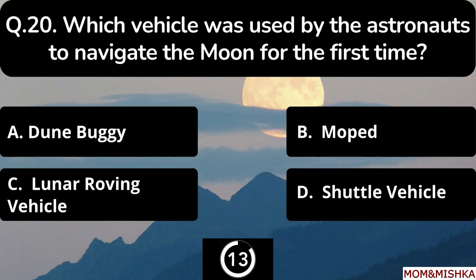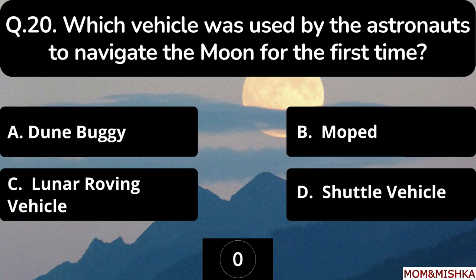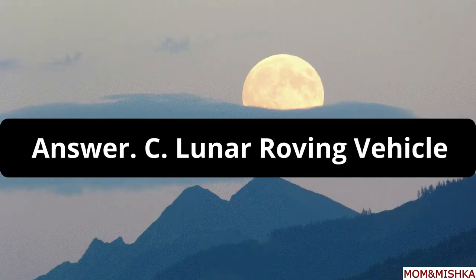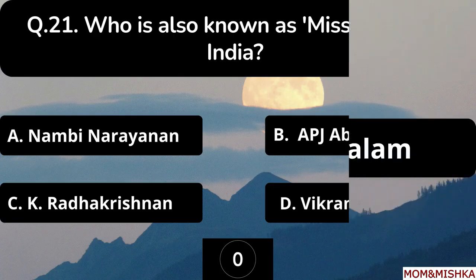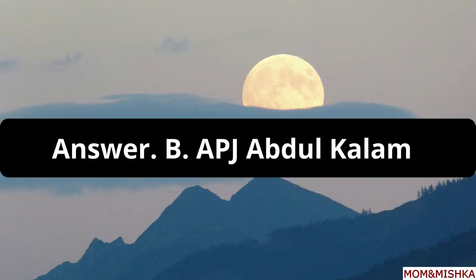Which vehicle was used by the astronauts to navigate the moon for the first time? The answer is option C: Lunar Roving Vehicle. Who is also known as the Missile Man of India? The correct answer is option B: APJ Abdul Kalam.